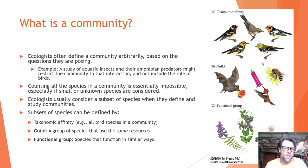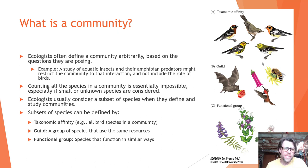Ecologists often define a community arbitrarily based on the questions they're posing. For example, a study of aquatic insects and their amphibian predators might restrict the community to that interaction and not include the role of birds, fish, or other organisms. Counting all the species in a community is essentially impossible, especially if small or unknown species like bacteria are considered.